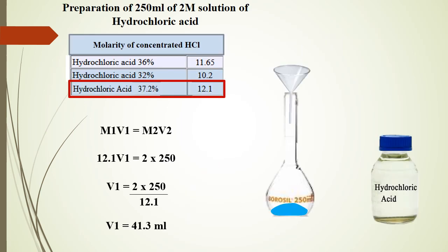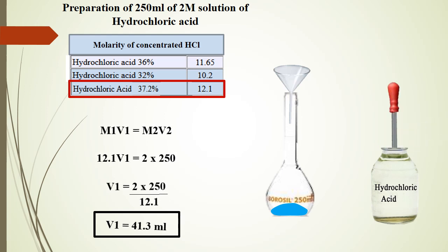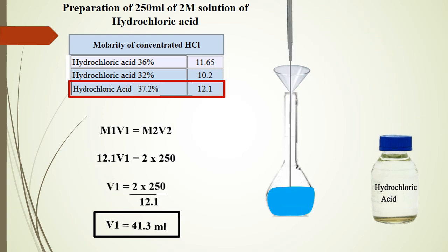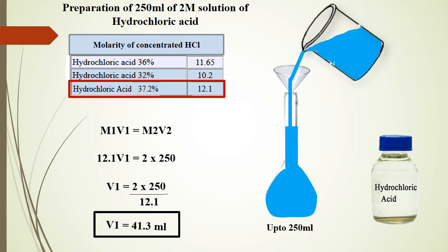To prepare 250 ml of 2 molar solution of hydrochloric acid: M1 will be the same as in the previous calculation. V1 is to be found. M2 will be 2, as we want to prepare a 2 molar solution. V2 is 250, as we want to prepare a total volume of 250 ml. Take 41.3 ml of concentrated hydrochloric acid using a pipette into a 250 ml flask having a little water in it, and dilute the solution up to 250 ml. This will be 250 ml of 2 molar solution of hydrochloric acid.